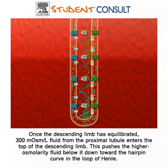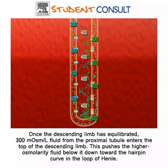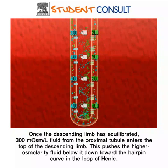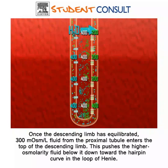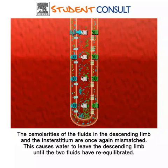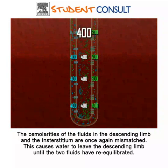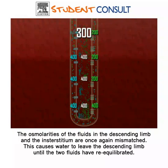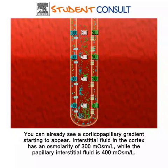Once the descending limb has equilibrated, fluid from the proximal tubule enters, pushing the higher osmolarity fluid below it down the loop of Henle. The osmolarities of the fluids in the descending limb and the interstitium are again mismatched, causing water to leave the descending limb until the two fluids have re-equilibrated. You can see a corticopapillary gradient being generated between the fluid in the cortex and the fluid below.